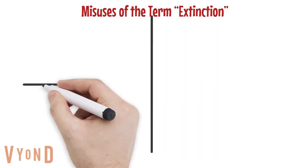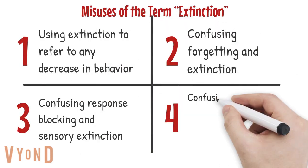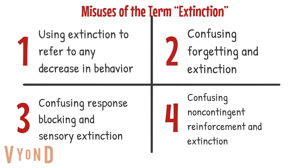There are four misuses of the term extinction. The first one is using it to refer to any decrease in a behavior. The second one is confusing forgetting and extinction. The third is confusing response blocking and sensory extinction. And the fourth one is confusing non-contingent reinforcement and extinction.